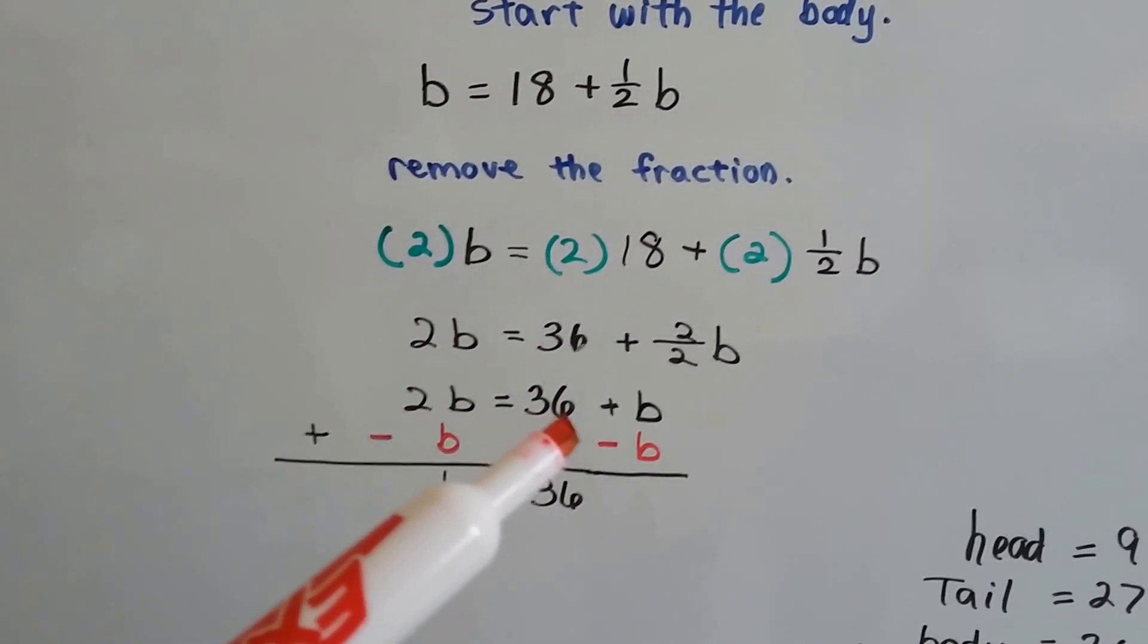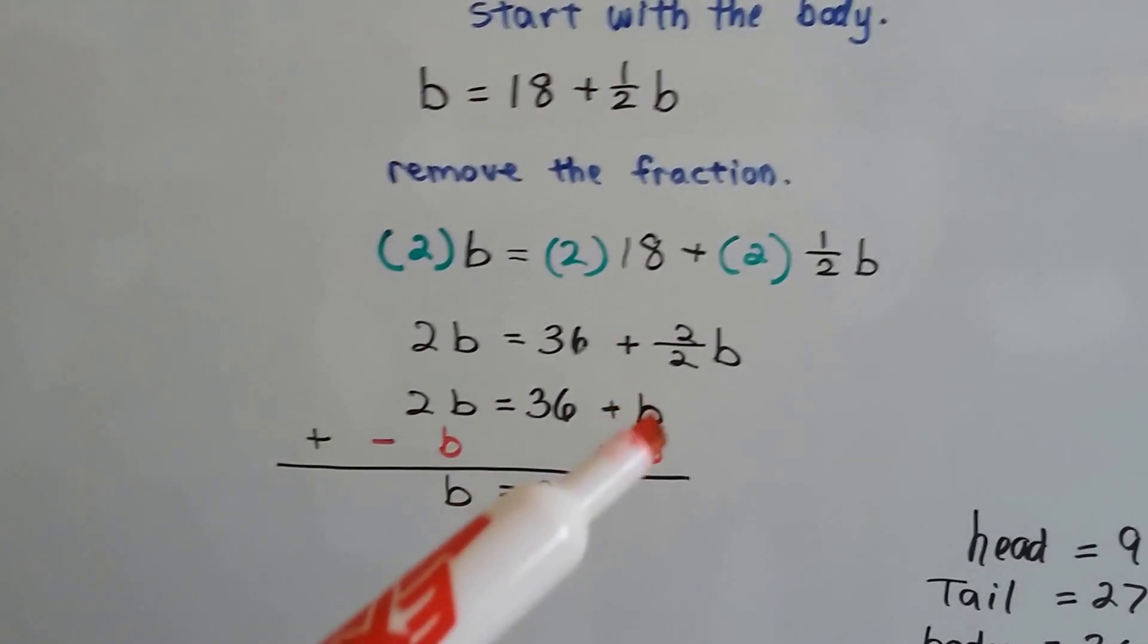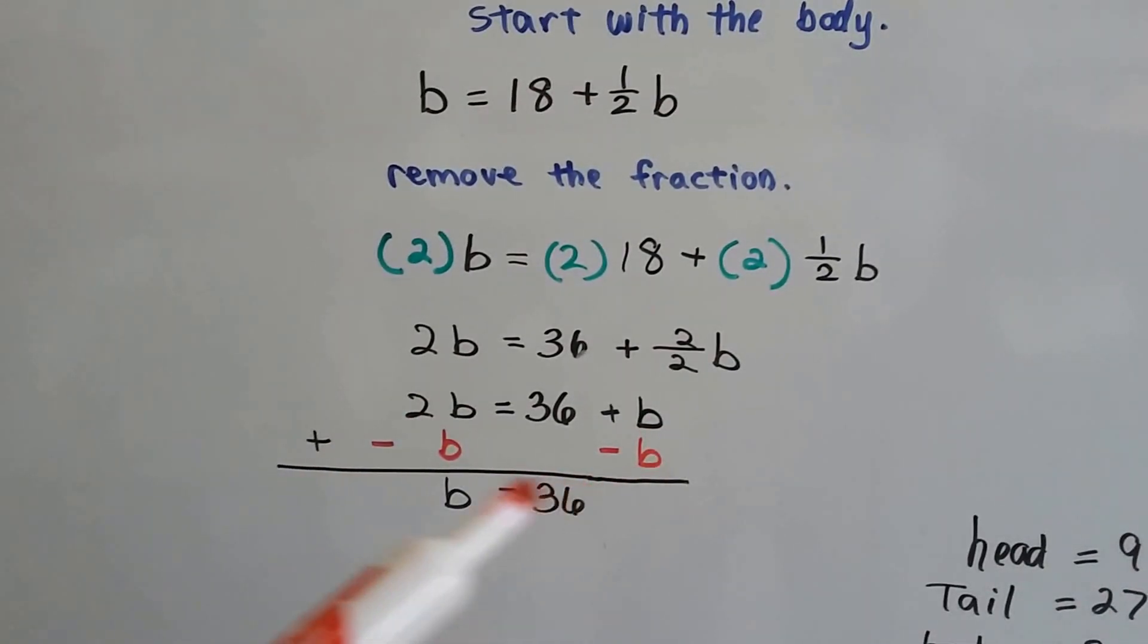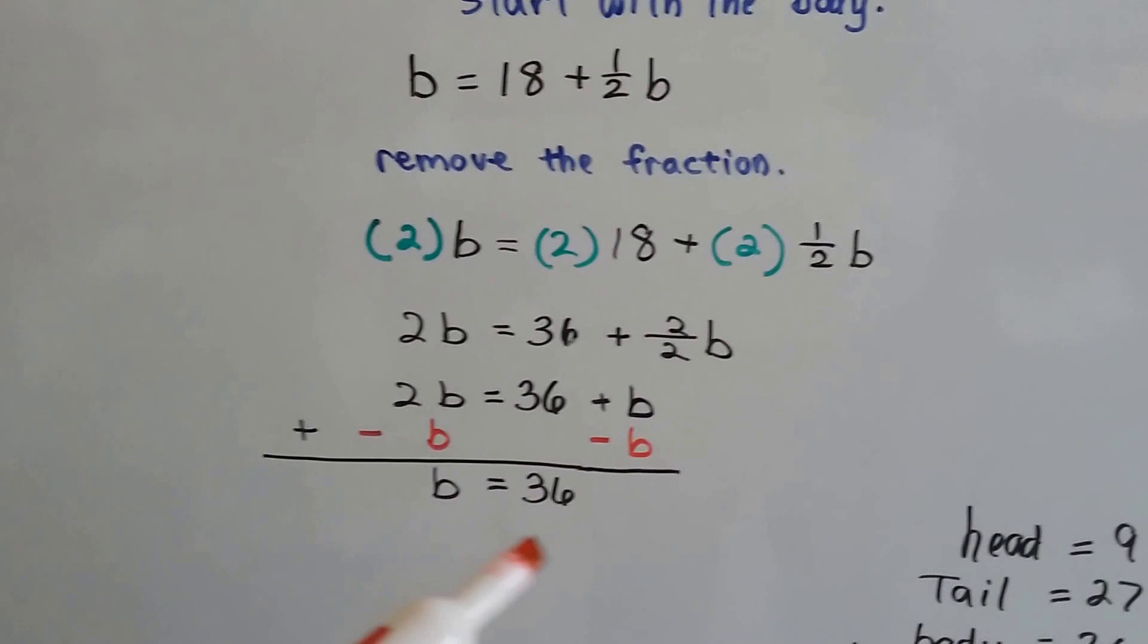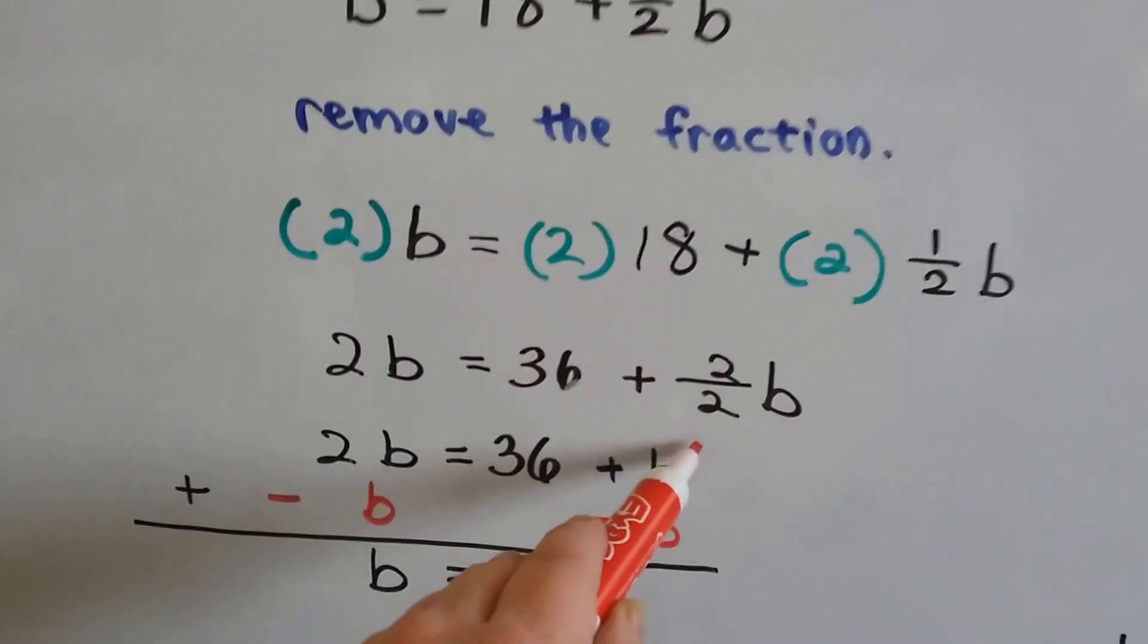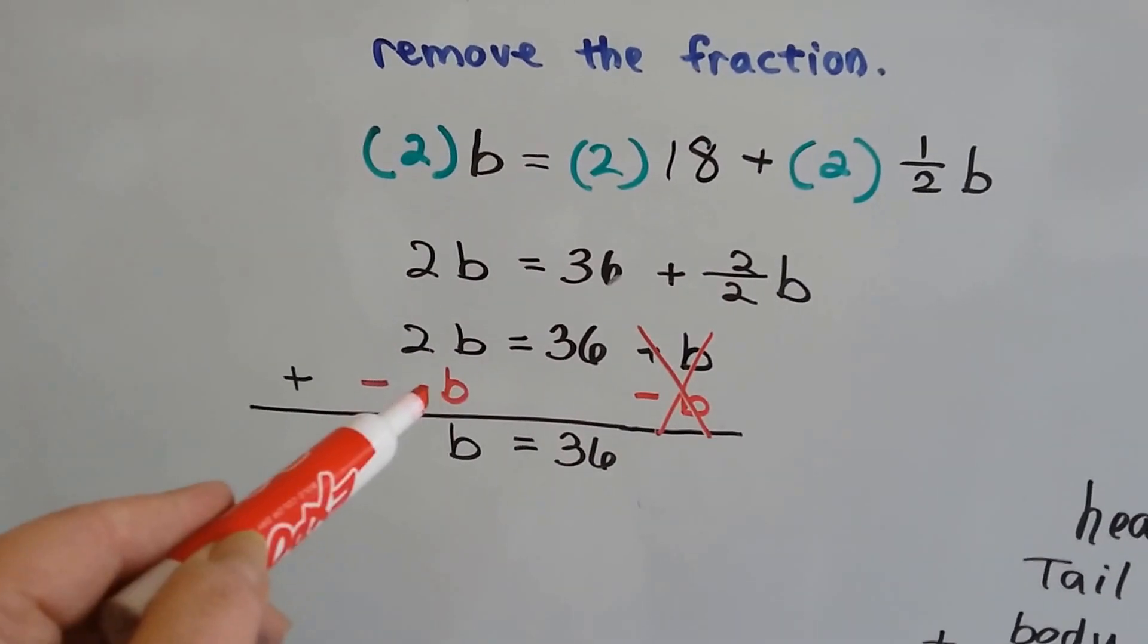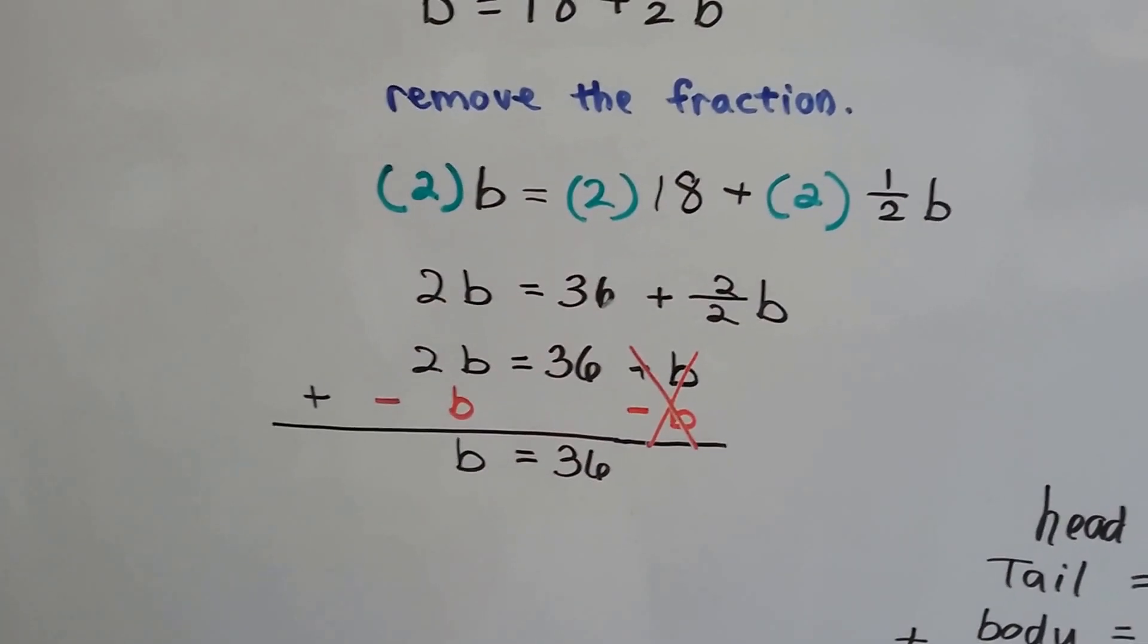Now we have 2b equals 36 plus b. We need to isolate this b to one side, so we add a negative b to each side of the equation, and that creates a zero pair here, and it eliminates this b, and 2b minus 1b is a b. So we know the body is 36 inches.